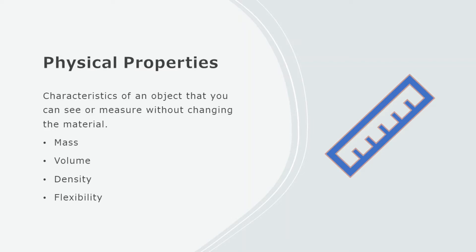So all of these words that I'm using to describe these materials — these are physical properties of those materials. Physical properties are characteristics of an object that you can see or measure without changing the material, such as mass, volume, density, and flexibility.